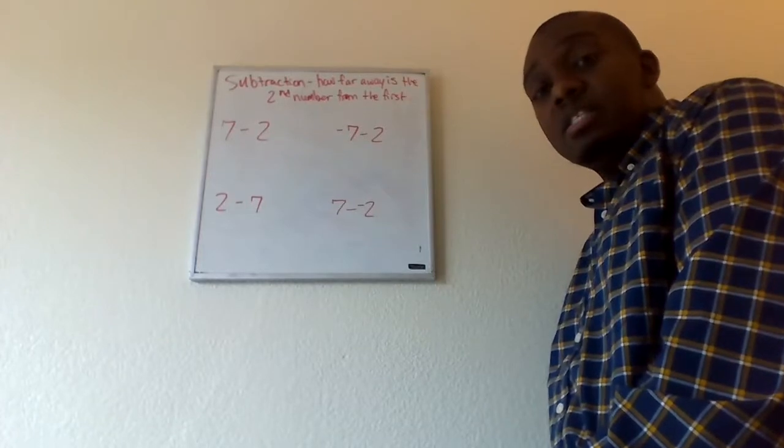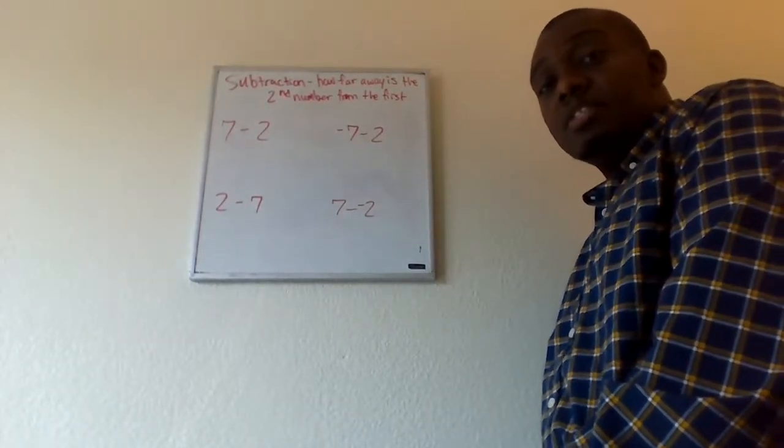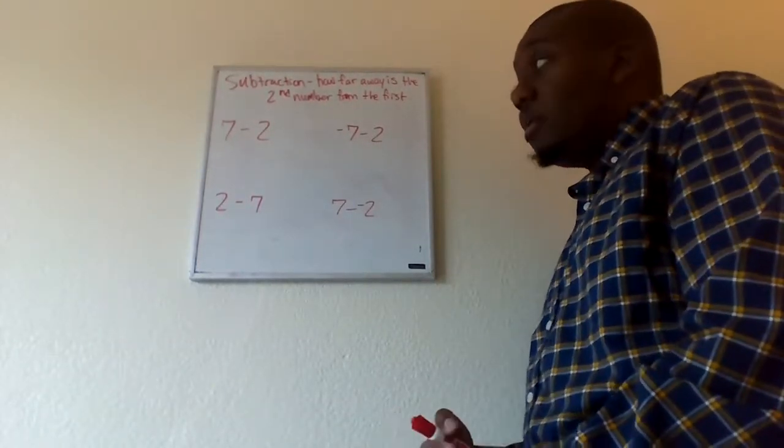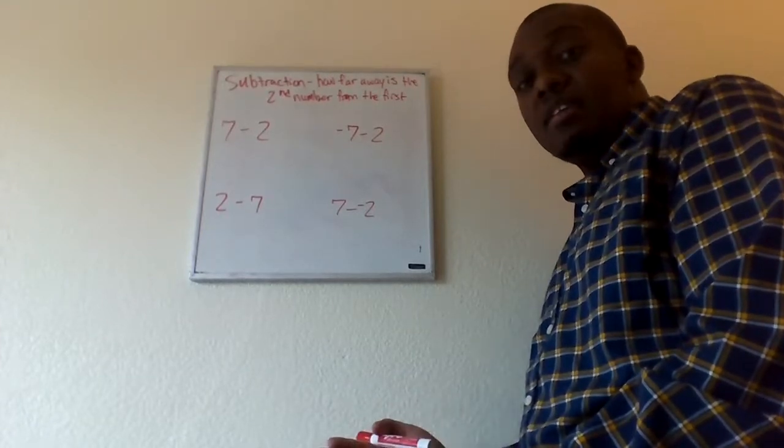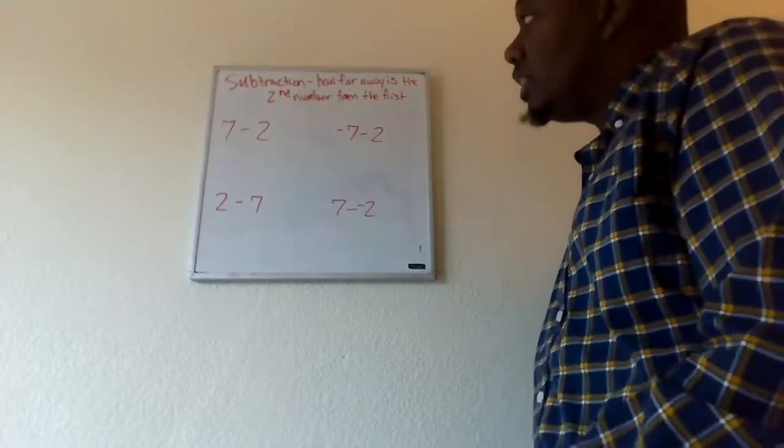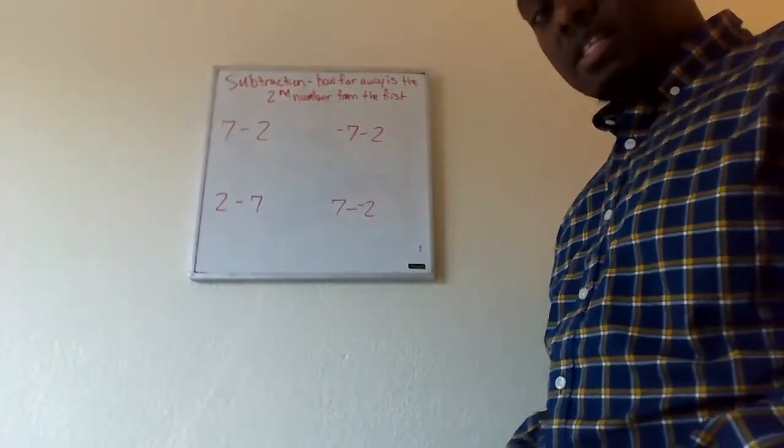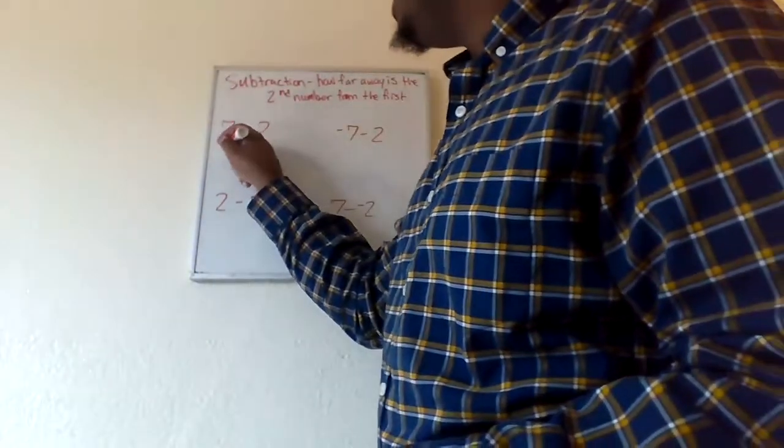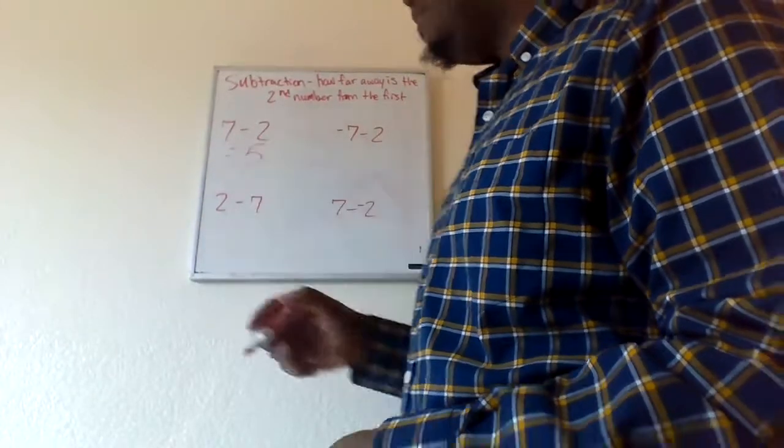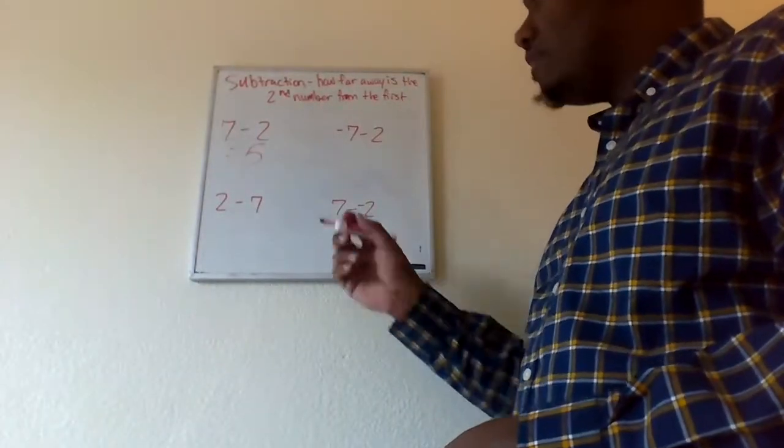Well, that answer is quite simple, right? Because if you ask yourself how far is two away from seven, we would just say, okay, we'll have to increase five in order to get there. So the answer for this, seven minus two would, of course, be equal to five. Quite simple. We got five.